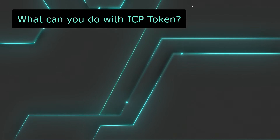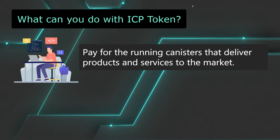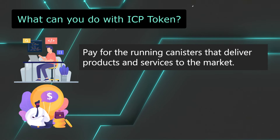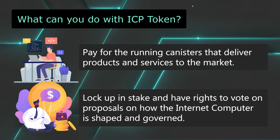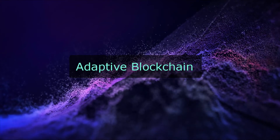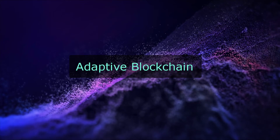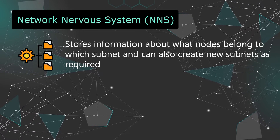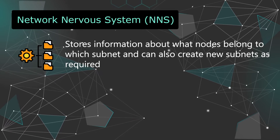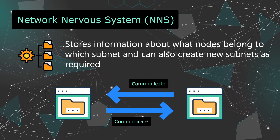ICP tokens can be used by developers by converting them into cycles, which are then utilized to pay for running canisters that deliver products and services to the market. Another use of these tokens is to lock them up in stake — which in Internet Computer terms is known as a Neuron. You can utilize these Neurons to submit or vote on proposals on how the Internet Computer is shaped and governed, making it an adaptive blockchain that can update and evolve its network in real-time. This autonomous governance system is embedded within its protocols, called the Network Nervous System. The NNS stores information about what nodes belong to which subnet and creates new subnets as required. The Internet Computer comprises many subnet blockchains for scalability, and canisters can send messages to other canisters and subnets.